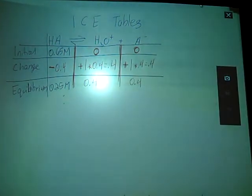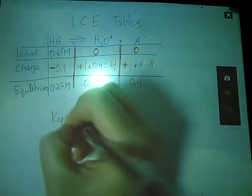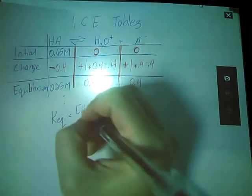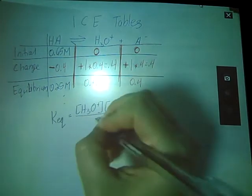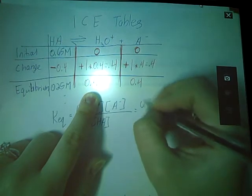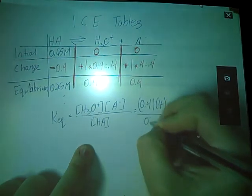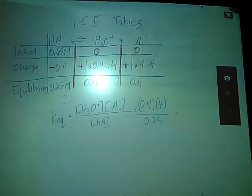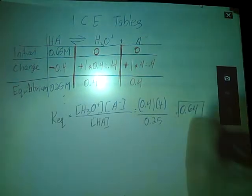So now I could even calculate the KEQ. KEQ, if you remember, is products over reactants. Let's plug in our numbers. 0.4, 0.4, 0.25. Punch that into my calculator. Gives me a K of 0.64. Look at that.